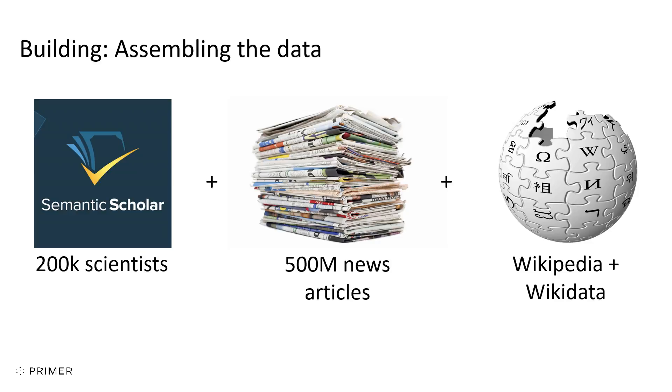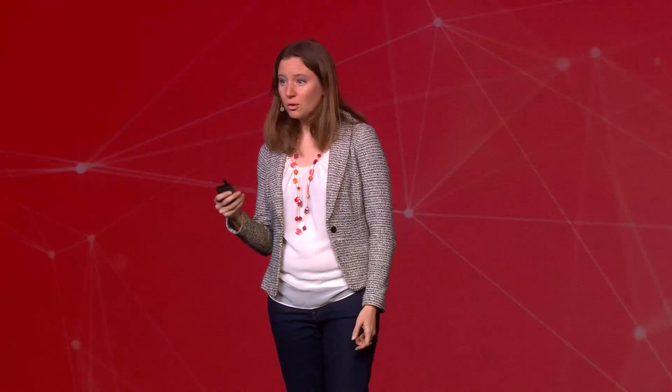Our first challenge was to link these together based on the scientists' names. This is tricky because people don't have unique names. My favorite example is the Michael Jordan of AI, who is a computer science professor called Michael Jordan over at the University of California in Berkeley. If you were to Google him — and I recommend you do, because he's one of the most interesting thinkers on the future of AI — you'll realize you can't just Google 'Michael Jordan.' You need to add words like 'machine learning,' 'artificial intelligence,' or 'Berkeley' to get down to who he is.